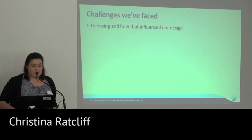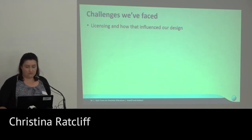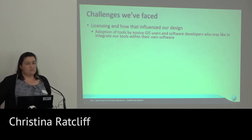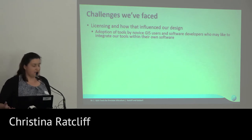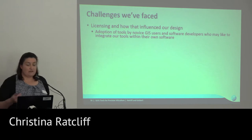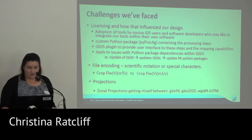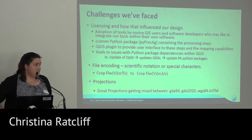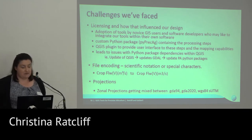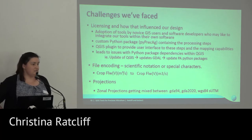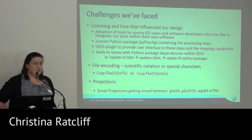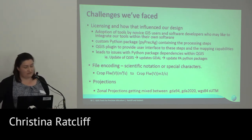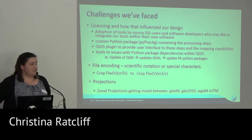Challenges we faced: the QGIS licence was one of the big impacts. We wanted our tools to be adopted not only by novice GIS users and researchers, but also software developers — the people manufacturing yield monitors on tractors, potentially incorporating our tools into their own software or web services. That led us to creating our own custom Python package, which we've called PyPrecAg — short for Precision Agriculture — to contain the core processing steps. Then we're using a QGIS plugin to provide the user interface, help documentation, cartography, and map displays. This has caused issues — things like buffering: we're not using the QGIS functionality, we've had to develop our own and use other geospatial Python packages.